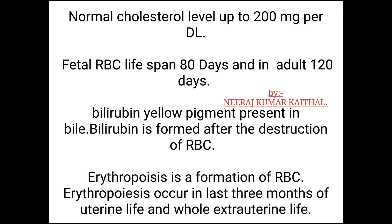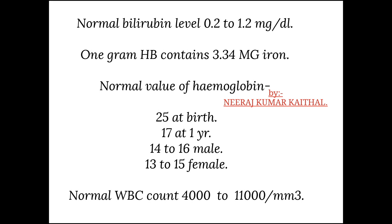Fetal RBC life span is 80 days and in adults it is 120 days. Bilirubin is the yellow pigment present in bile, formed after the destruction of RBCs. Erythropoiesis is the formation of RBCs, occurring in the last 3 months of uterine life and throughout extra-uterine life. Normal bilirubin level is 0.22 to 1.2 mg per dL.